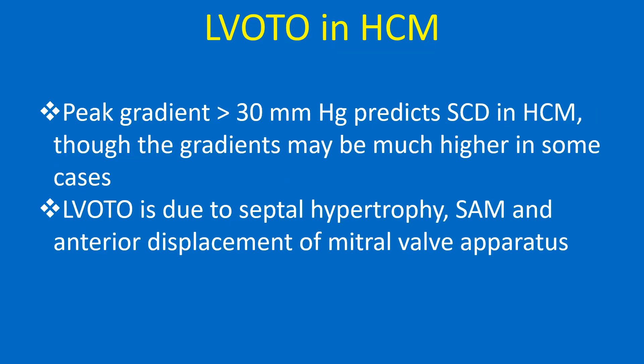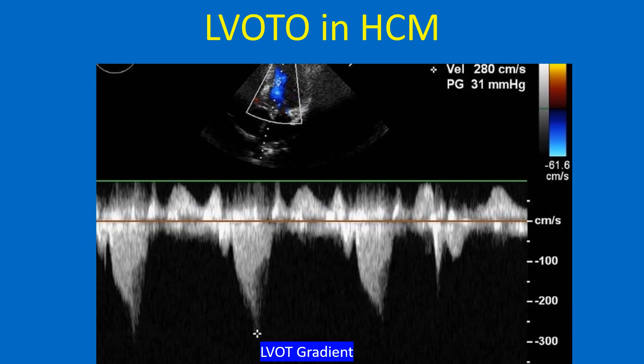LVOTO in HCM: Peak gradient more than 30 mmHg predicts sudden cardiac death in HCM, though gradients may be much higher in some cases. LVOTO is due to septal hypertrophy, SAM, and anterior displacement of the mitral valve apparatus. Doppler echo showing LVOT gradient in HCM.